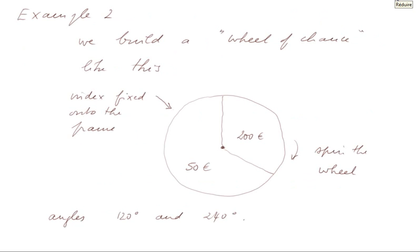Example 2: We built a wheel of chance like this. It's a disk that can spin around an axle that is fixed on a frame, and on the frame there is an index also fixed on the frame. That will show, when we spin the wheel, one of two sectors. On the wheel, that is the disk, I have drawn two sectors: one of them with an angle of 120 degrees, that is one third of the disk, bearing the value 200 euros, and the other sector, that is the complement, that is 240 degrees and two thirds of the disk, bears the value 50 euros. The experiment is spinning the wheel and looking at what sector, and therefore what value, the index shows.